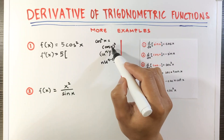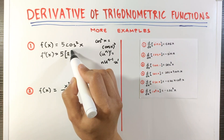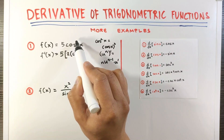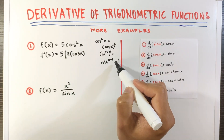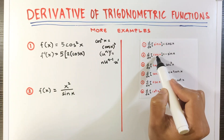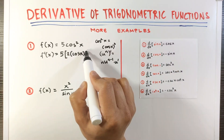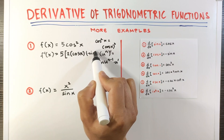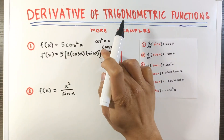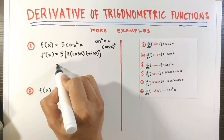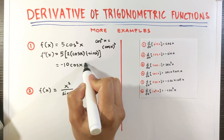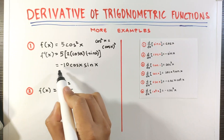Now let's apply this to cosine x squared. Bring down 2 as a coefficient, copy the base cosine x, subtract 1 from the exponent — so 2 minus 1 is 1 — and multiply by the derivative of the base. The derivative of cosine is negative sine x, so we have times negative sine x. Simplifying: 5 times 2 times negative 1 is negative 10, giving us negative 10 cosine x sine x. This is the final answer.